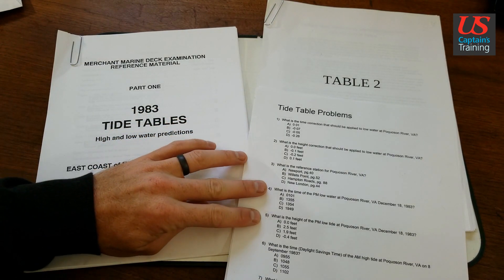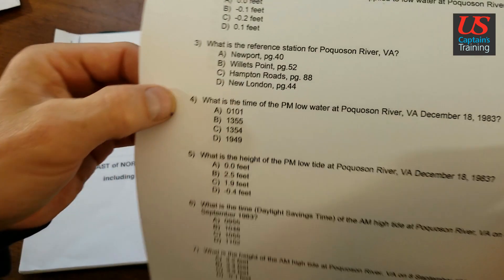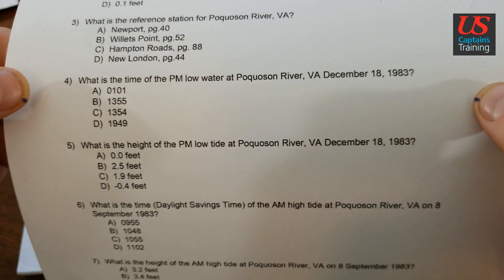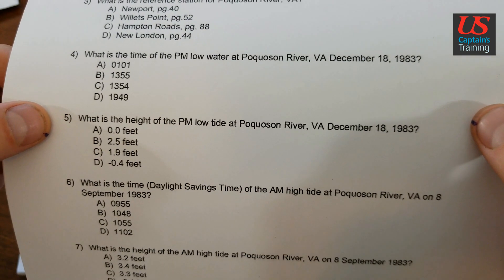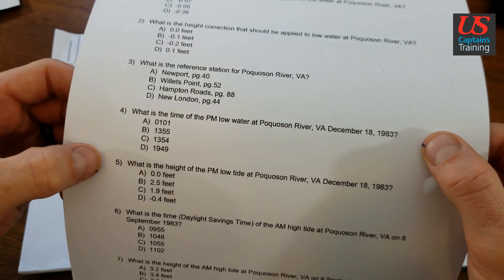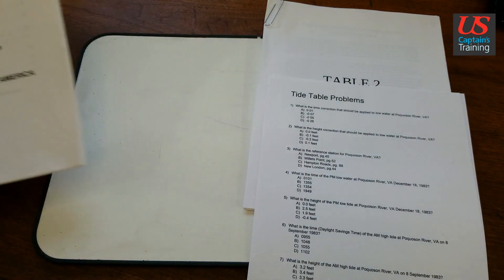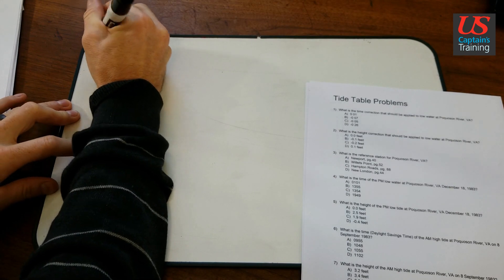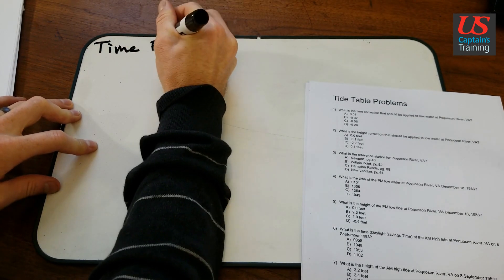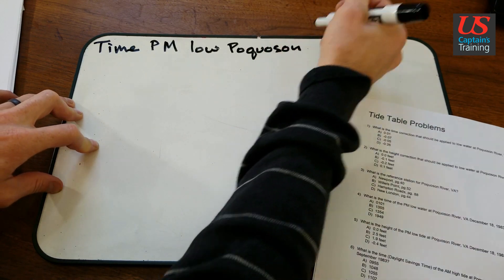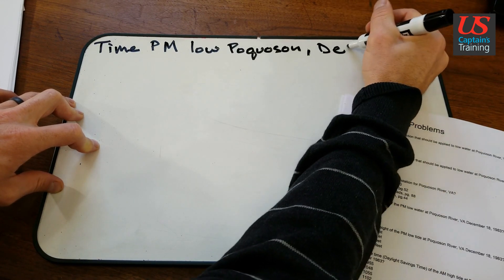Tide table practice problems four and five. Question four reads: what is the time of the PM low water at Pocosin River VA, December 18th? And question five reads: what is the height of the PM low tide at Pocosin River VA, December 18th? We're going to focus on four, and five will fall into place. So let's record our question: time, PM low, Pocosin River VA, December 18.